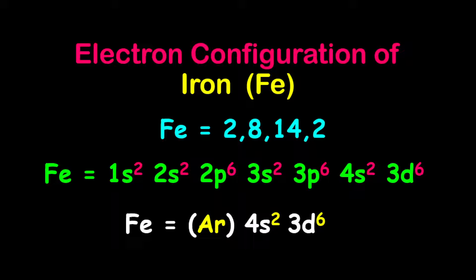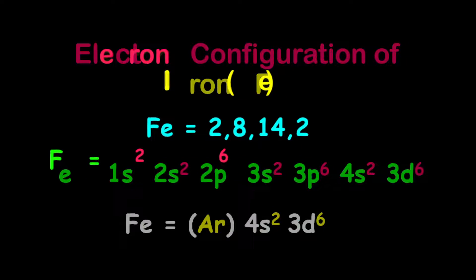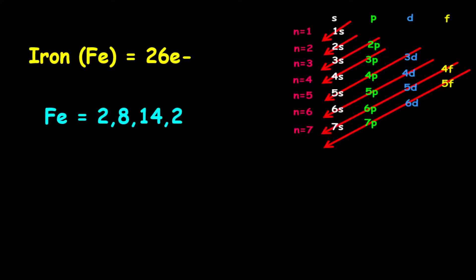The electron configuration of iron. Iron has 26 electrons. Therefore, the electron configuration is given as 2, 8, 14, and 2. For the orbital filling electron configuration,